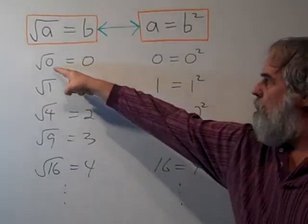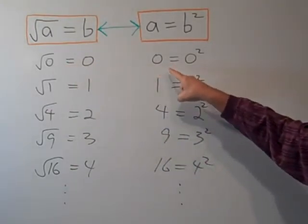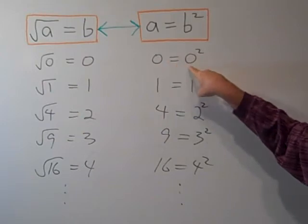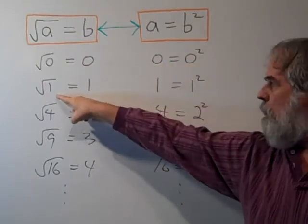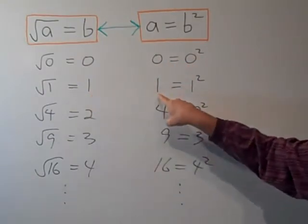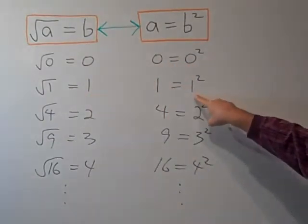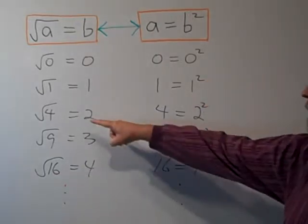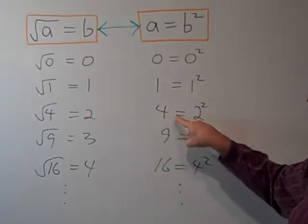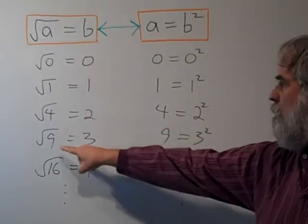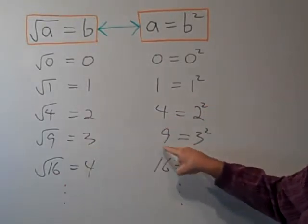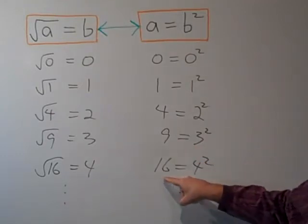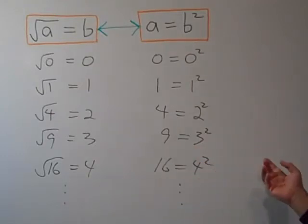The square root of zero is zero, and that's precisely for the same reason that zero is equal to zero times zero. The square root of one is one because one is equal to one times one, or one squared. The square root of four is two because four is two squared. The square root of nine is three because nine is three squared. The square root of sixteen is four because sixteen is four squared.